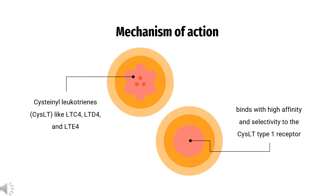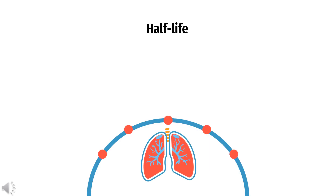Due to the role of leukotrienes in the pathogenesis of asthma, modulation of leukotriene formation through inhibition of 5-lipoxygenase activity may reduce airway symptoms, decrease bronchial smooth muscle tone, and improve asthma control. Half-life: 2.5 hours.